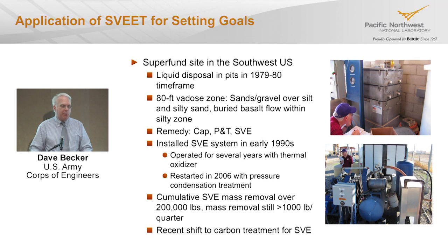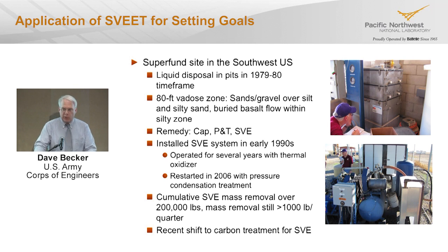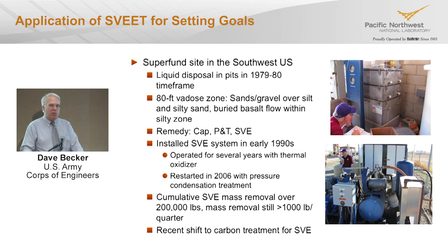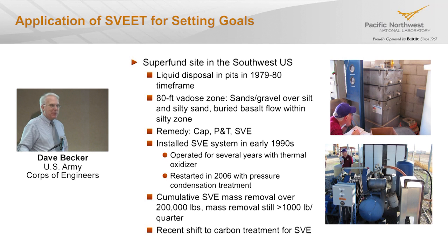They went back and looked at soil vapor concentrations and found they had rebounded tremendously — to hundreds of thousands of micrograms per cubic meter — over a broad area much larger than the known release zone. Mass removal has been pretty robust: over 100 tons of VOCs removed from the site, with mass removal rates still approximately 1,500 pounds per quarter.